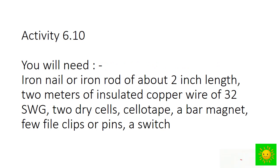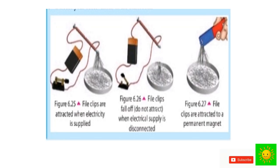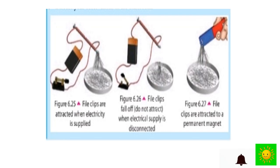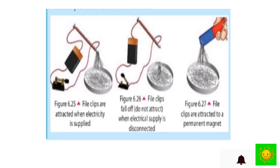You can do this simple activity. Wind insulated copper wire around an iron nail or iron rod to make a coil. Strip both ends of the coil and connect it to the dry cells. Bring the coil close to the paper clips while supplying electricity and see what happens. Then disconnect the electricity supply and bring the coil close to the clips again. Bring a bar magnet close to the clips and observe what happens.